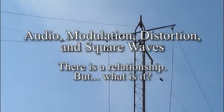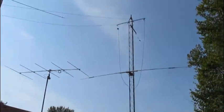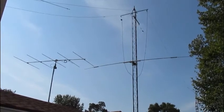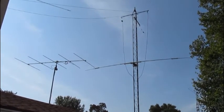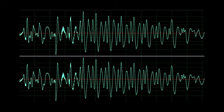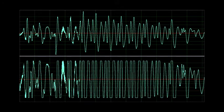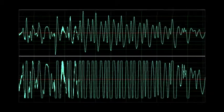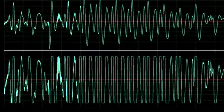Almost every discussion of operating procedure in amateur radio involves the issues of overmodulation and interference. It is generally understood that when audio is over-amplified or processed, the waveform becomes distorted or clipped.